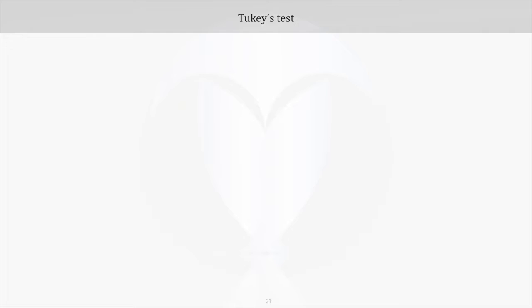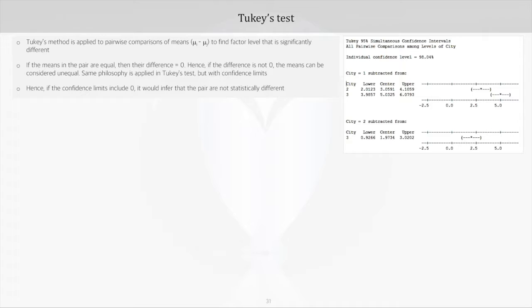Now coming to Tukey's test, this method is applied for pairwise comparison of means, like mu_i minus mu_j, to find the factor level that is significantly different.